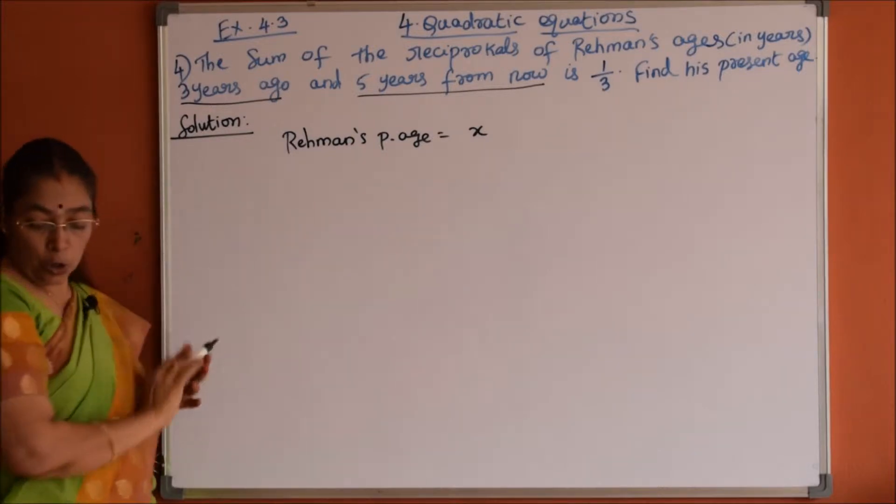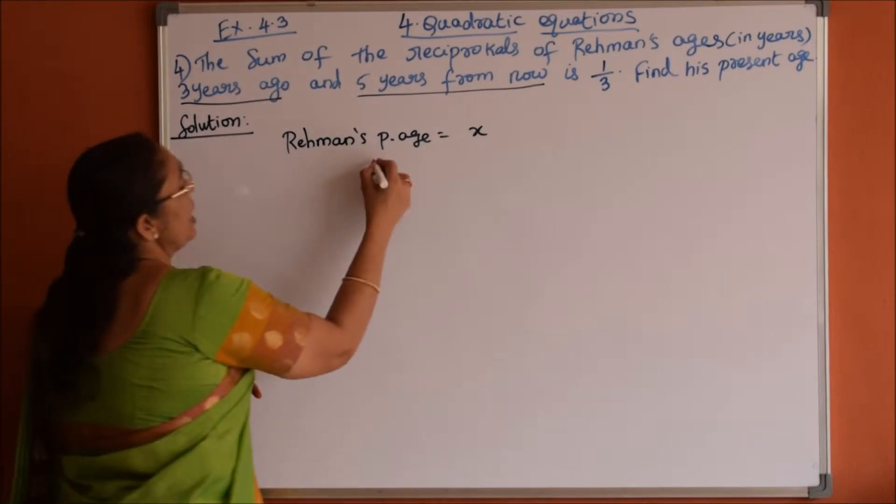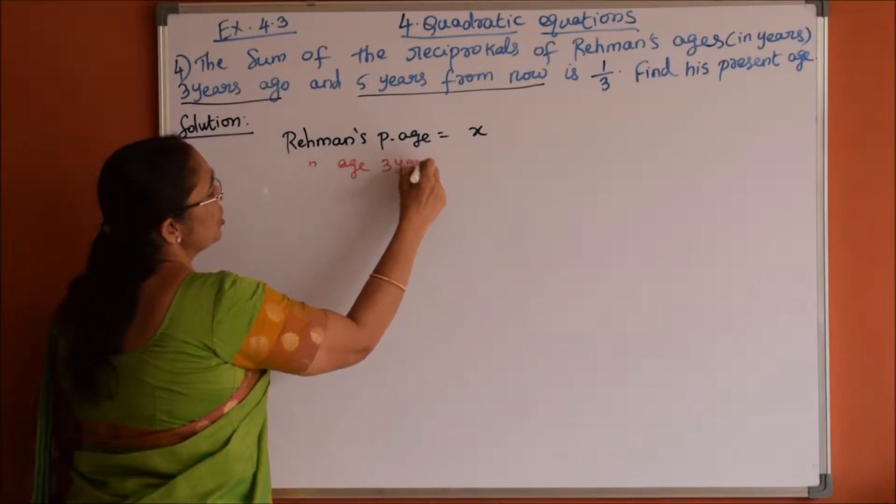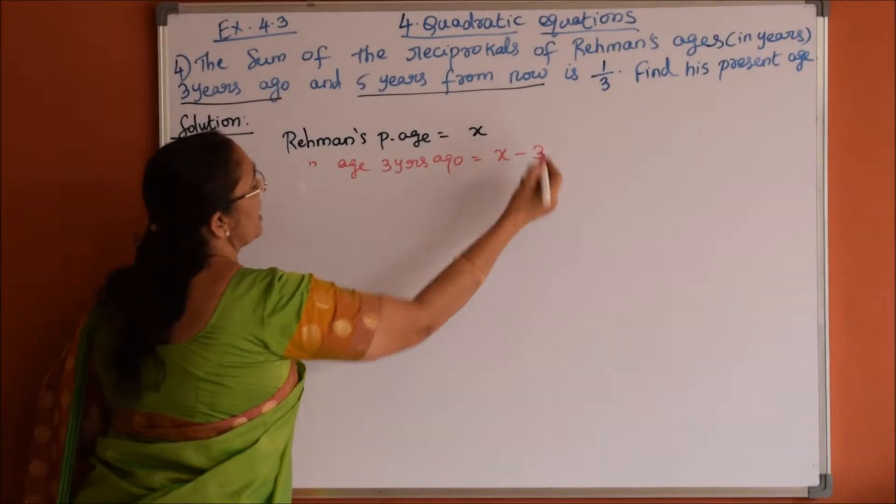3 years ago. So I have written here, Rahman's present age, 3 years, Rahman's age 3 years ago, how much? So 3 years ago he was x minus 3.